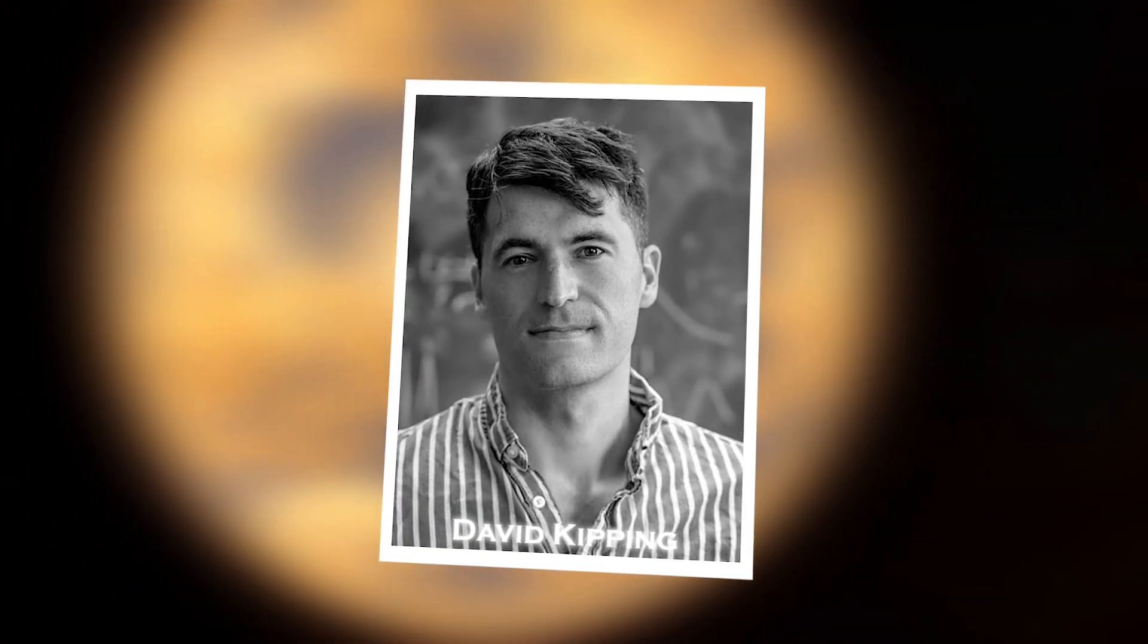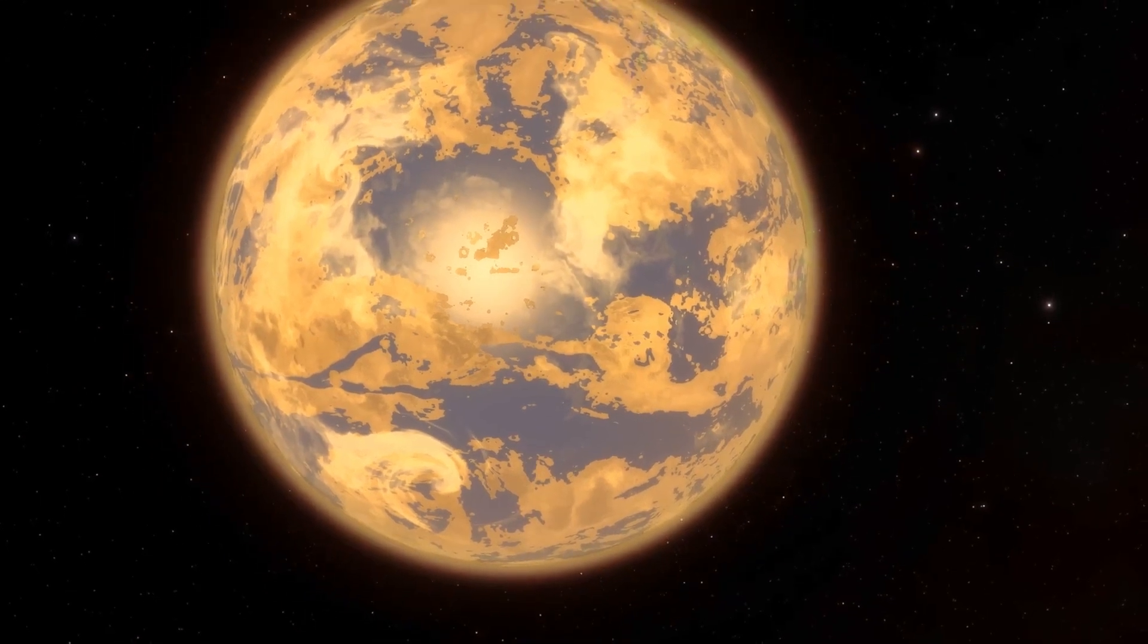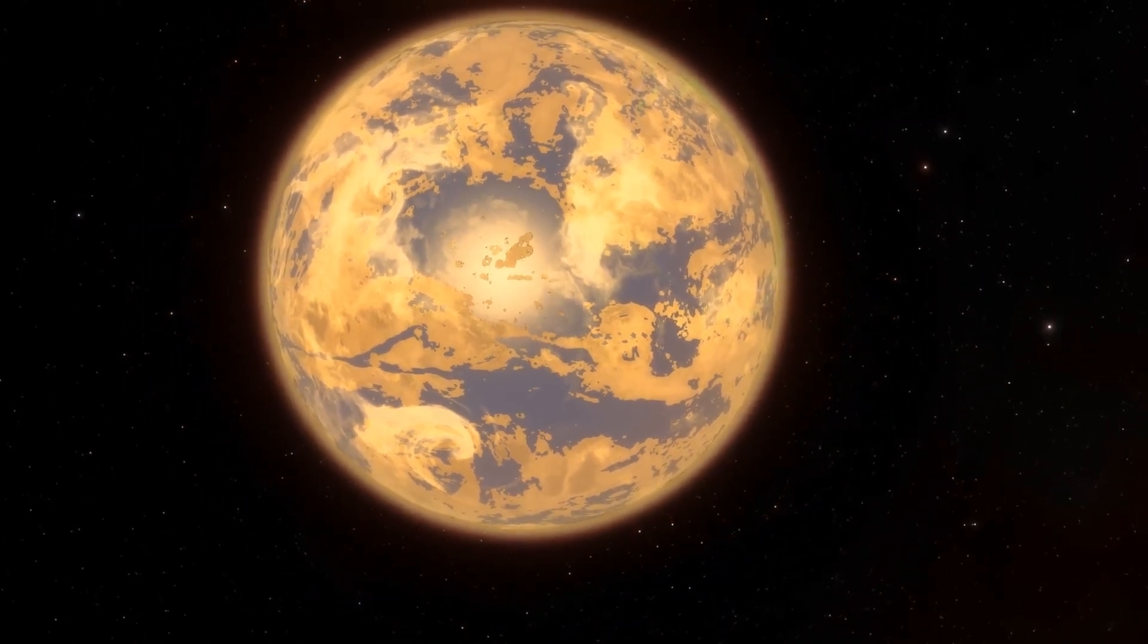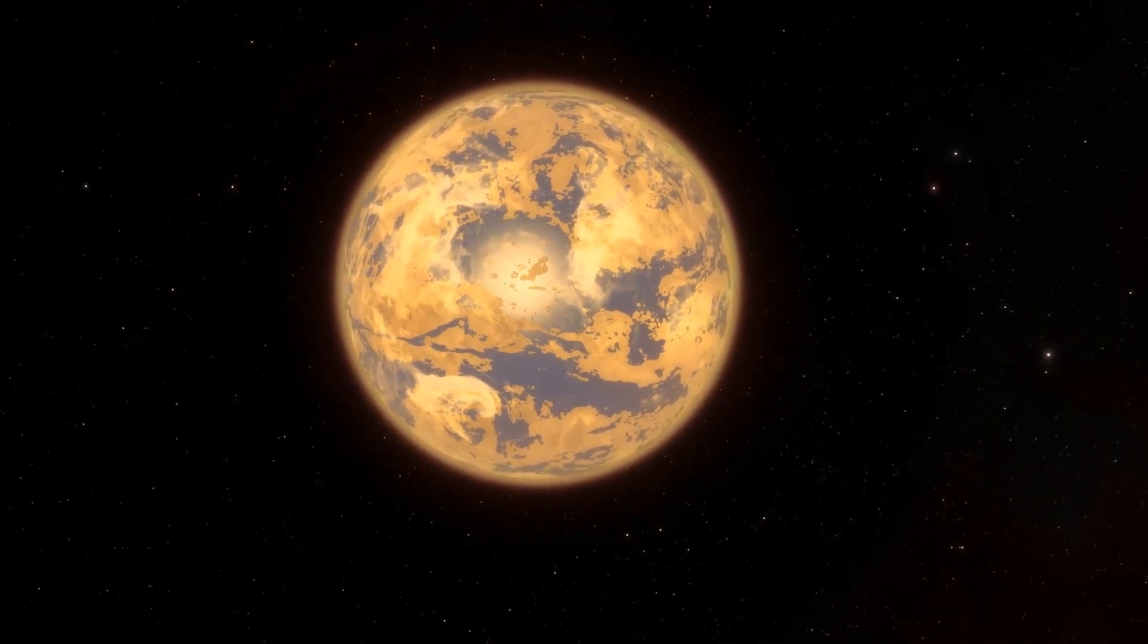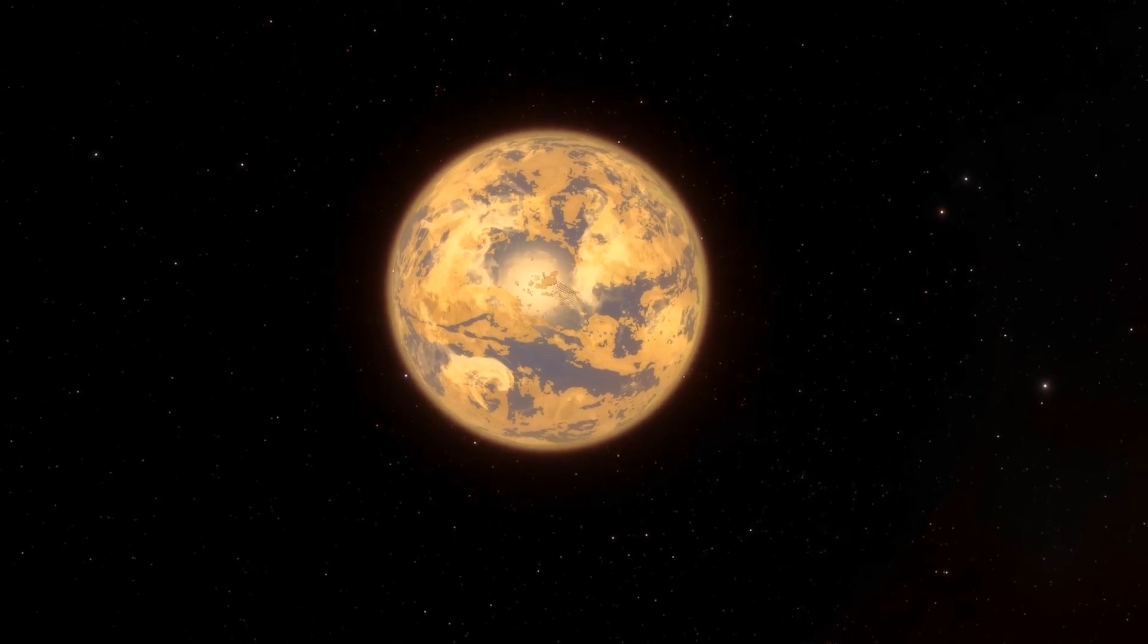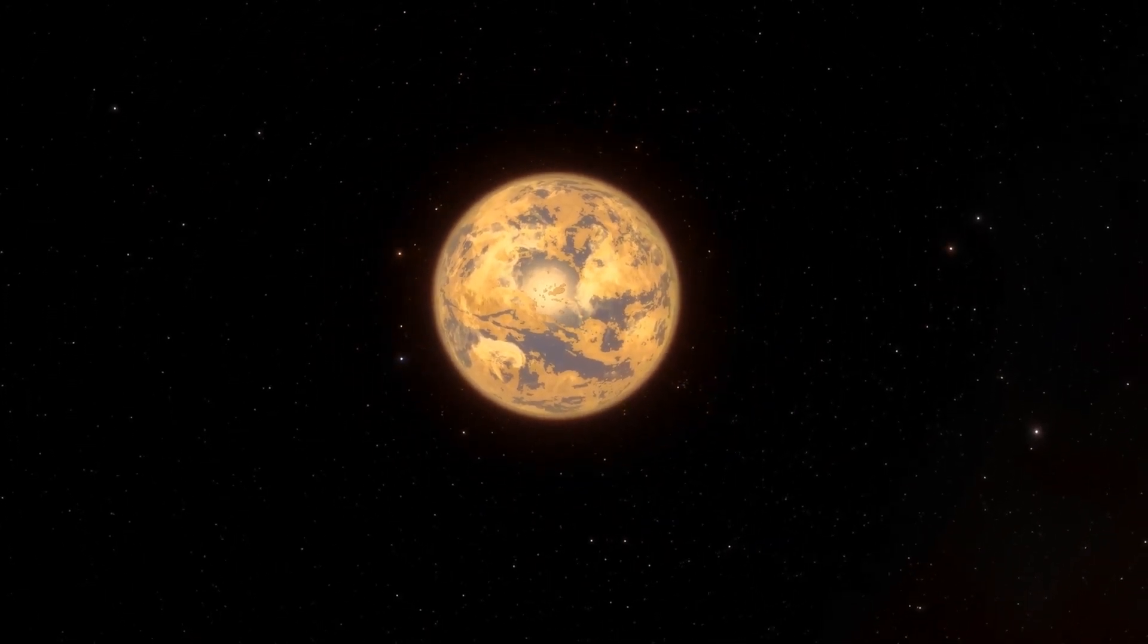David Kipping, an astronomer at Columbia University, characterizes the exoplanet Proxima b, where the urban lights have been sighted, as a celestial body with peculiar heating patterns that differ from those observed on other planets.